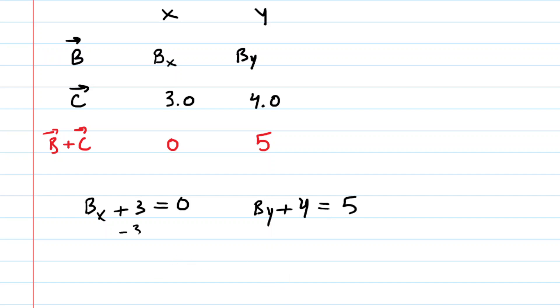Now we can easily solve for the x and y components of vector B. We'll subtract 3 from both sides here. We can see that Bx is equal to negative 3, and then subtract 4 from both sides of this. We see that the y component of vector B is equal to positive 1.